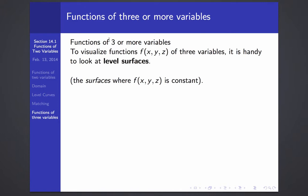There's one more topic in section 14.1, functions of three or more variables. To visualize functions of three variables, it can be handy to look at level surfaces, which are the analog to level curves for functions of two variables. So level surfaces are just the surfaces where f(x, y, z) is constant.